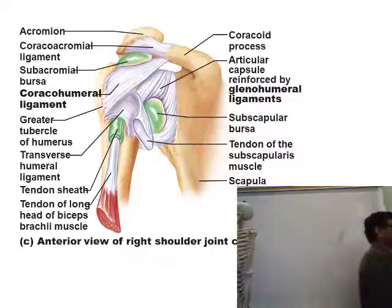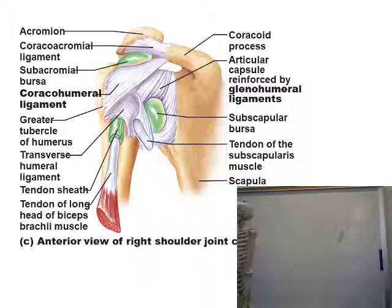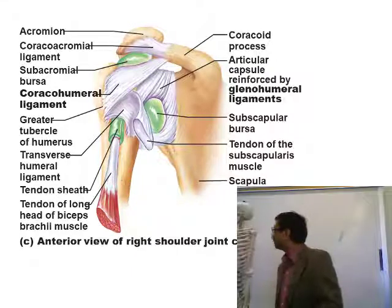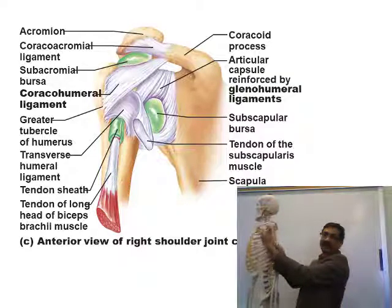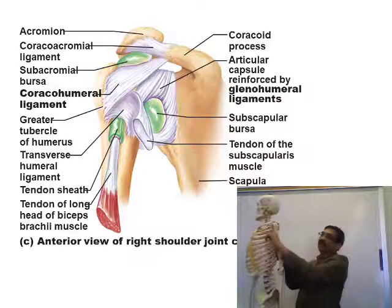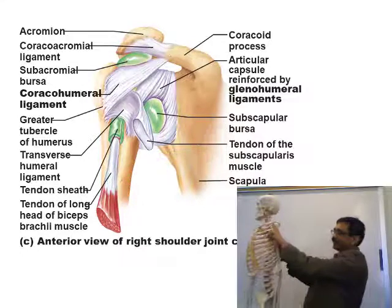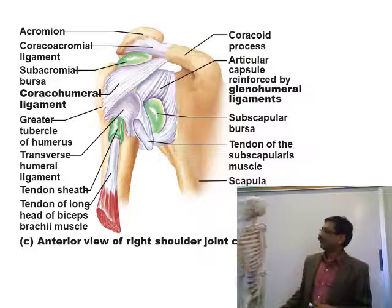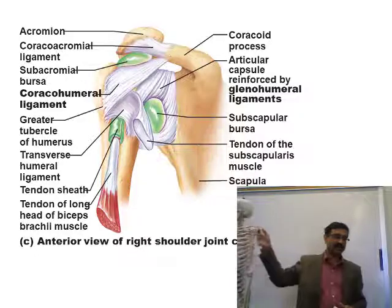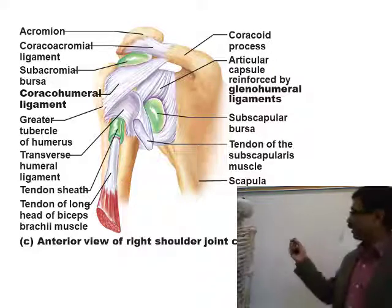In the shoulder joint you can see the green bursa structures, the coracoacromial ligament between the acromion and coracoid process, the coraco-humeral ligament, and the three gleno-humeral ligaments. The inter-tubercular sulcus on the humerus is the groove between the tubercles through which the tendon of the long head of the biceps brachii passes. You need to know the structures in and around both the knee joint and shoulder joint: the bursae, tendons, and ligaments.